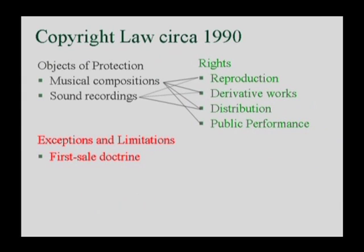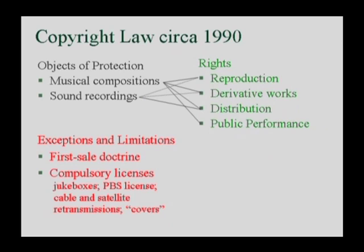A second cluster of limitations on these entitlements are known as compulsory licenses. A compulsory license is an arrangement under which the law gives the copyright owner an entitlement of some sort, but on the other hand forces the copyright owner to surrender that entitlement to a third party in return for a state-determined fee.